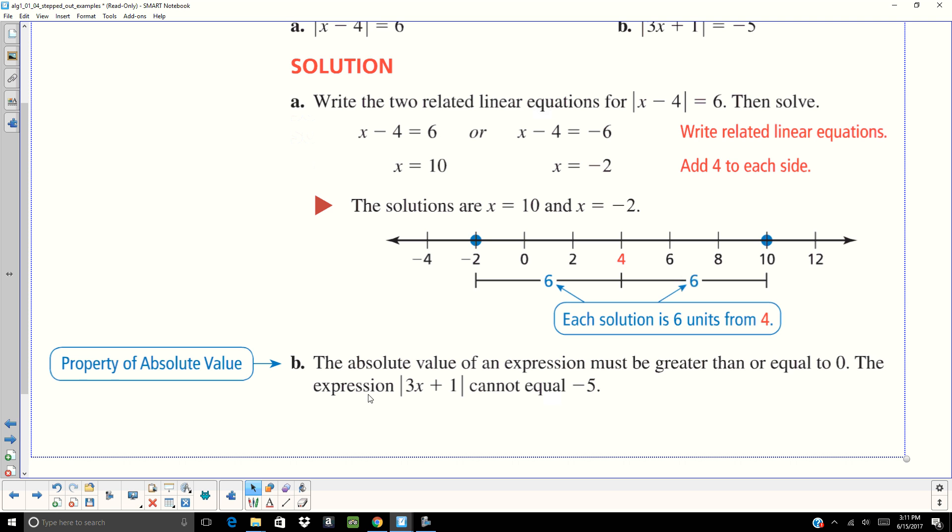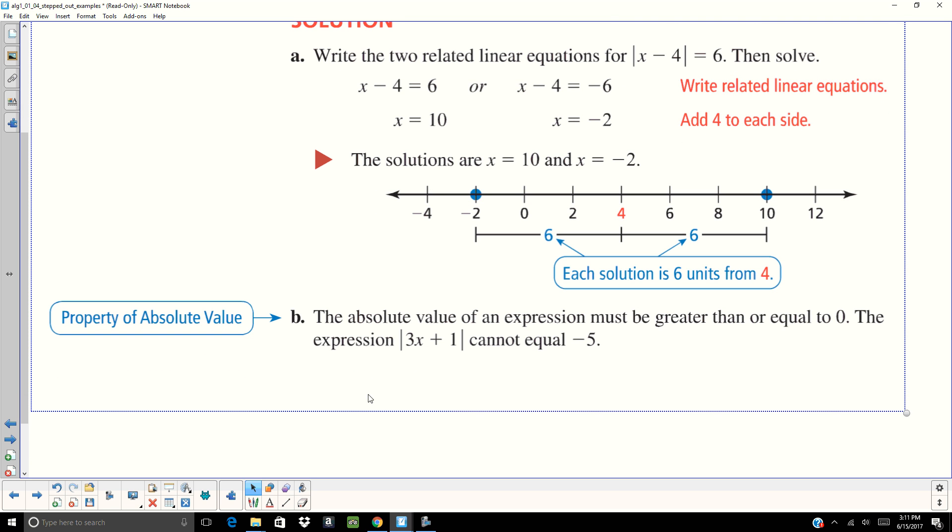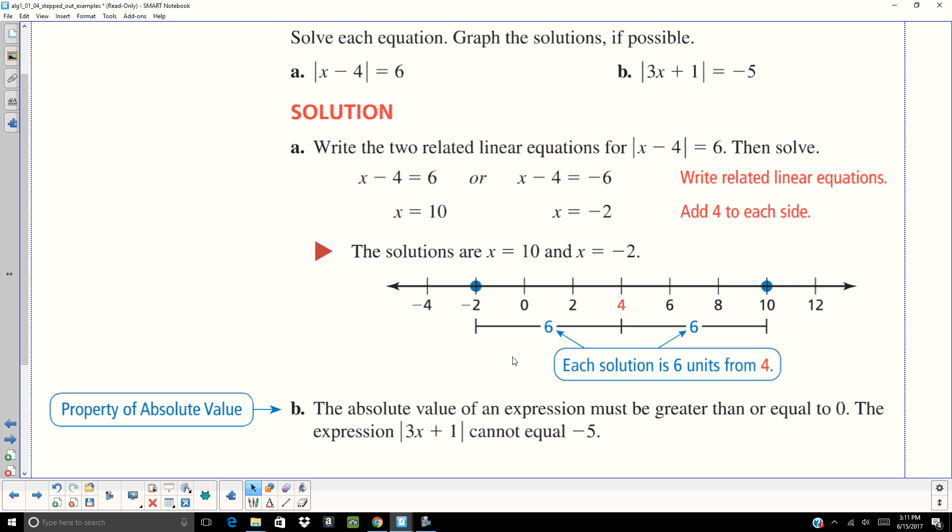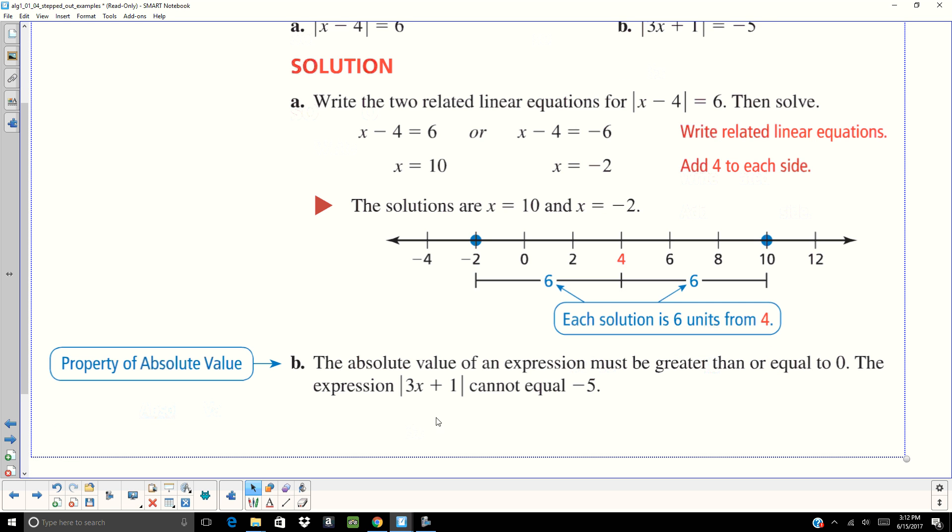All right. And our next one, the absolute value of any expression must be greater than or equal to zero. So if we have 3X plus 1, it cannot equal negative 5. Because if I take the absolute value of a number, it's never going to be a negative number. Absolute value is always going to be positive. So this equation has no solution.